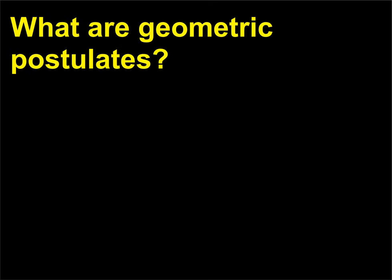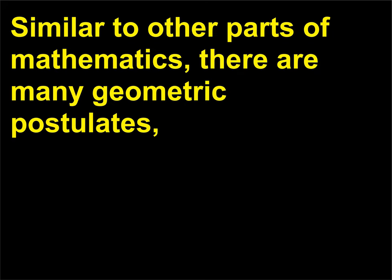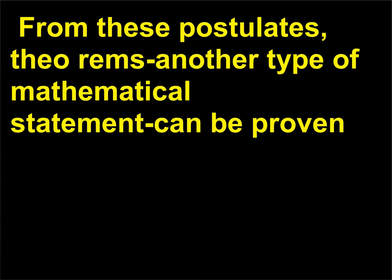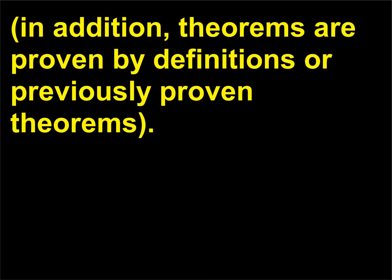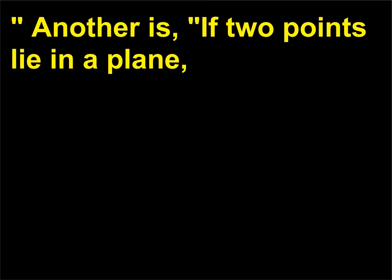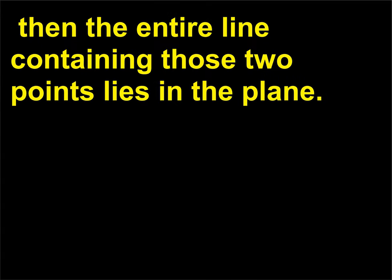What are geometric postulates? Similar to other parts of mathematics, there are many geometric postulates, or statements that are assumed to be true without proof. From these postulates, theorems (another type of mathematical statement) can be proven. In addition, theorems are proven by definitions or previously proven theorems. An example of a postulate in geometry is: through any two points there is exactly one line. Another is: if two points lie in a plane, then the entire line containing those two points lies in the plane.